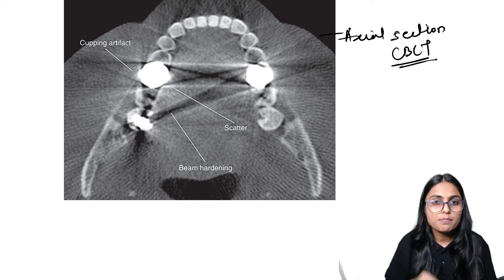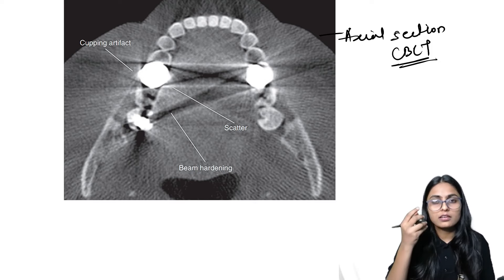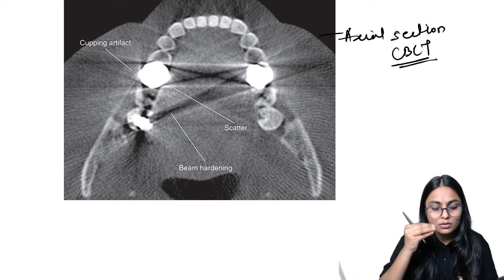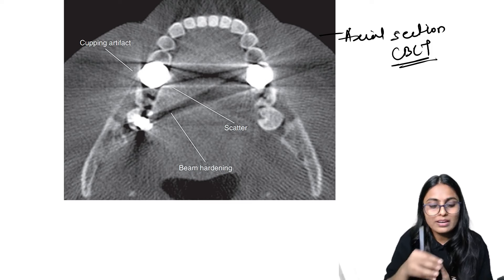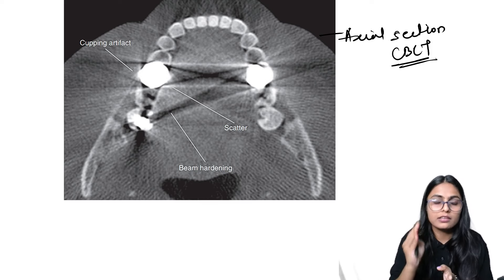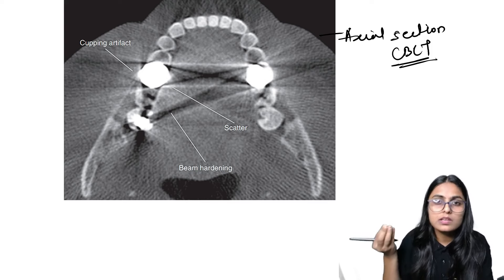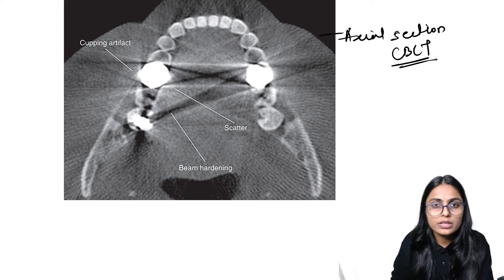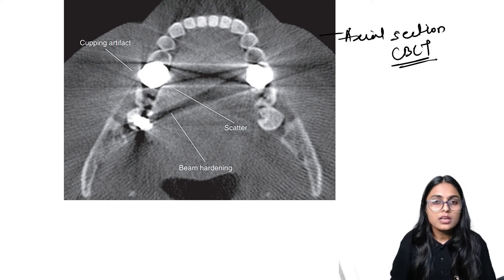When X-rays pass through tissues, there are different densities — enamel, dentine, pulp — so photons are absorbed differentially. Enamel restricts most photons due to its thick, dense layer, compared to pulp where X-ray photons easily pass through because soft tissue has lesser density. This differential absorption is what happens when photons pass through tissues.